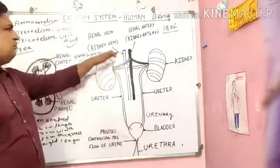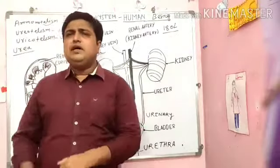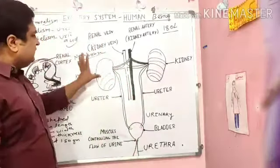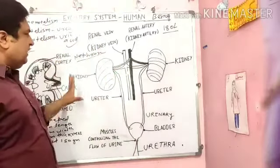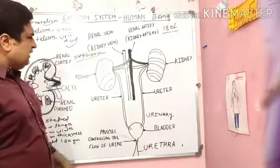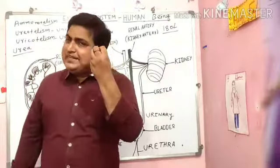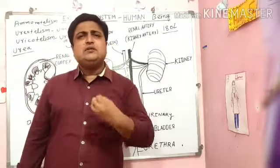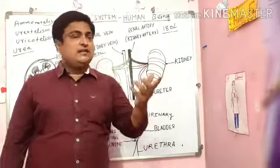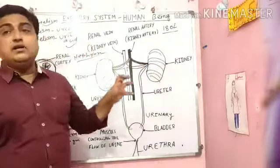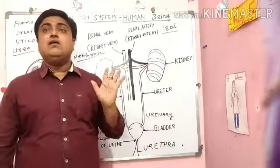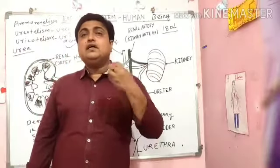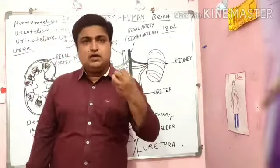After the urinary bladder comes the urethra, which is the last part of the excretory system. The kidney is a bean-shaped structure that filters the blood — specifically, it filters urea from the blood.